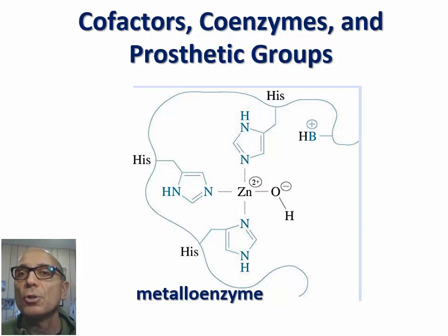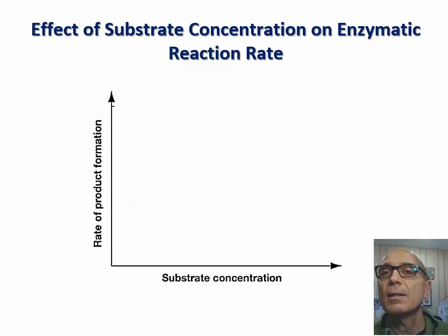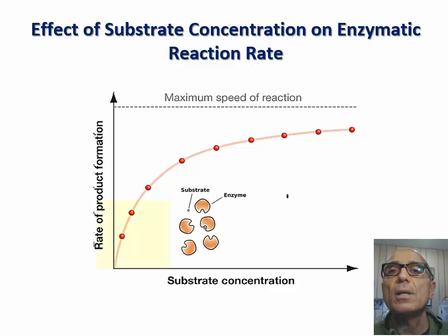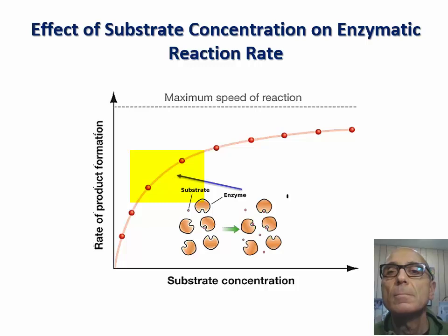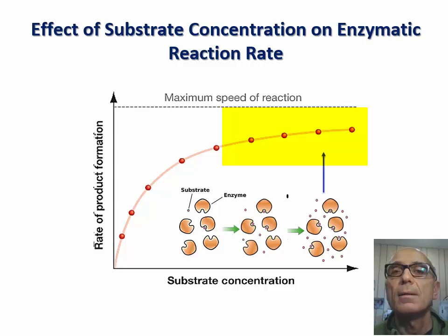The rate of an enzymatically catalyzed reaction can be measured as the rate at which substrate molecules are formed. If we conduct an experiment in which we measure the rate of catalytic reaction under different substrate concentrations and plot the results, many enzymes will show the following graph. At low substrate concentration, the rate of the reaction increases in a linear fashion. At intermediate substrate concentration, the rate of the enzyme-catalyzed reaction does not change and therefore reaches maximum speed. This observed plateau at high substrate concentration is due to the fact that all active sites are occupied and involved in catalysis, and therefore the saturation point is reached.